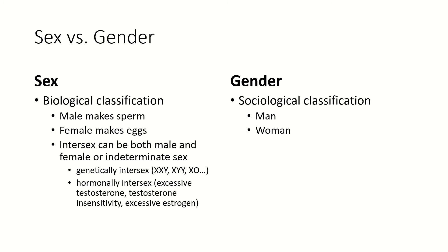There are many, many ways in which people are biologically not actually clearly male or female. Today we're going to talk about the normal biology of male and female and how the normal physiology works. I just want you to remember that nothing is as clear-cut — remember our theme: it's always more complicated in biology.